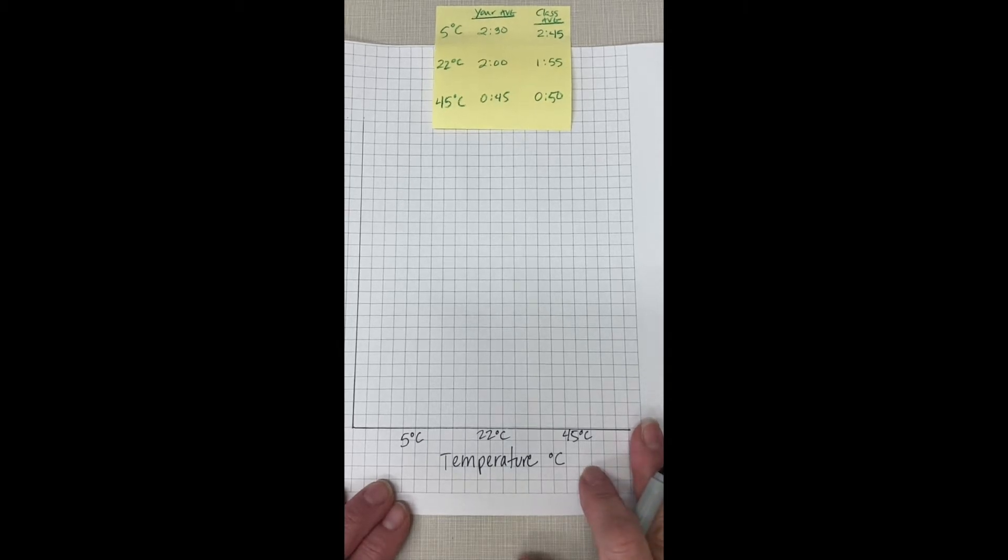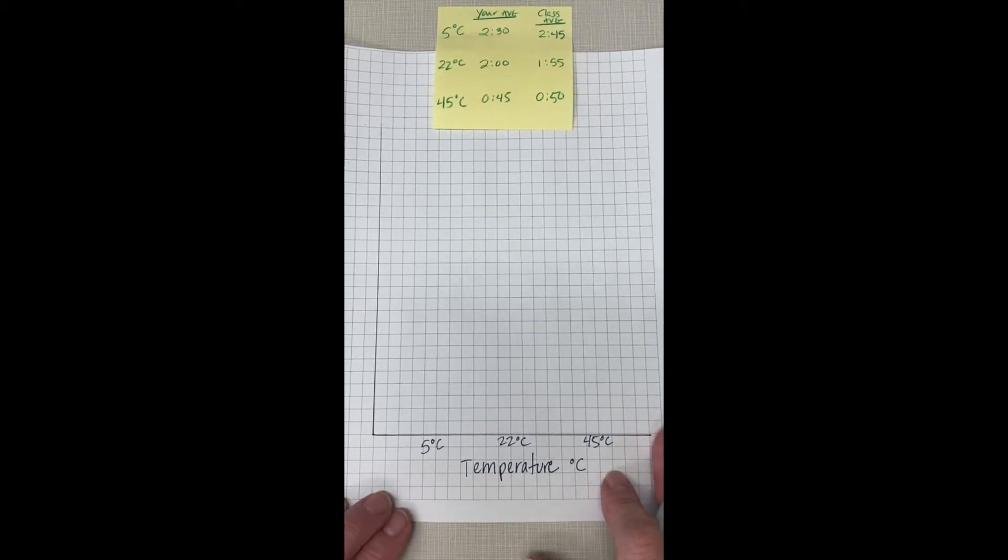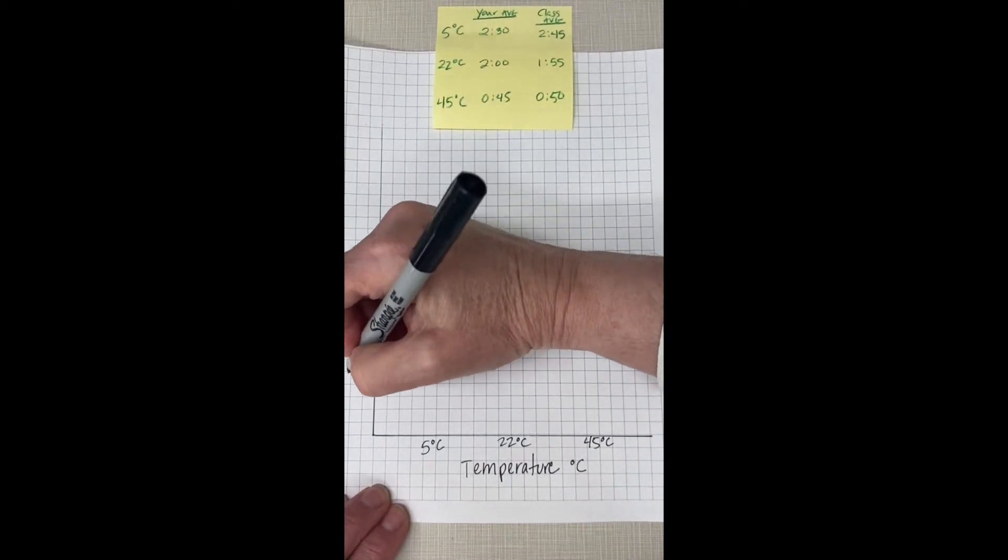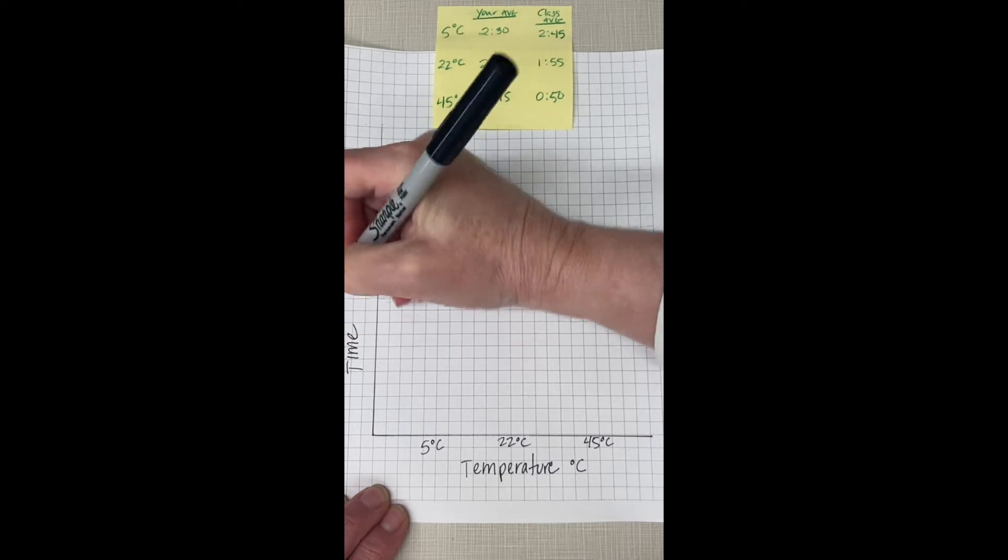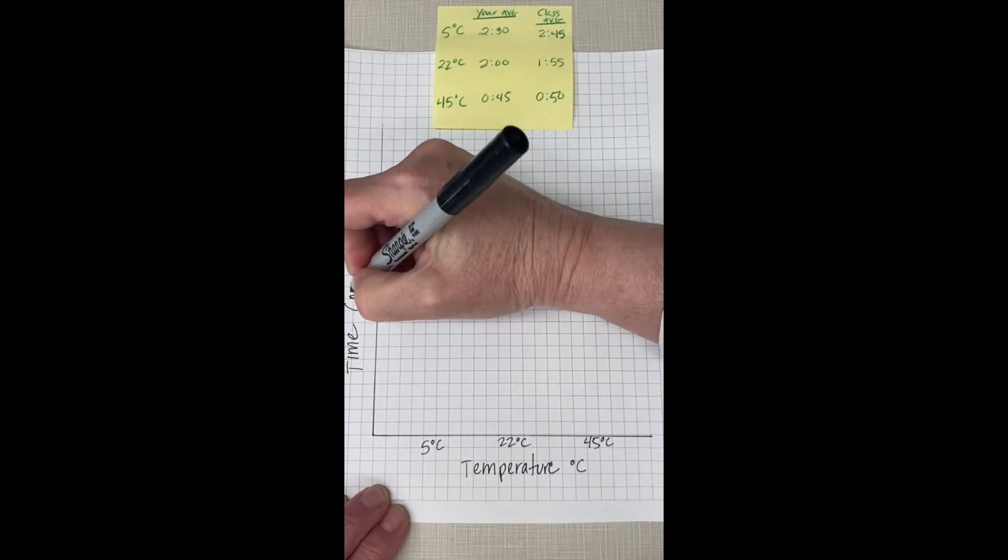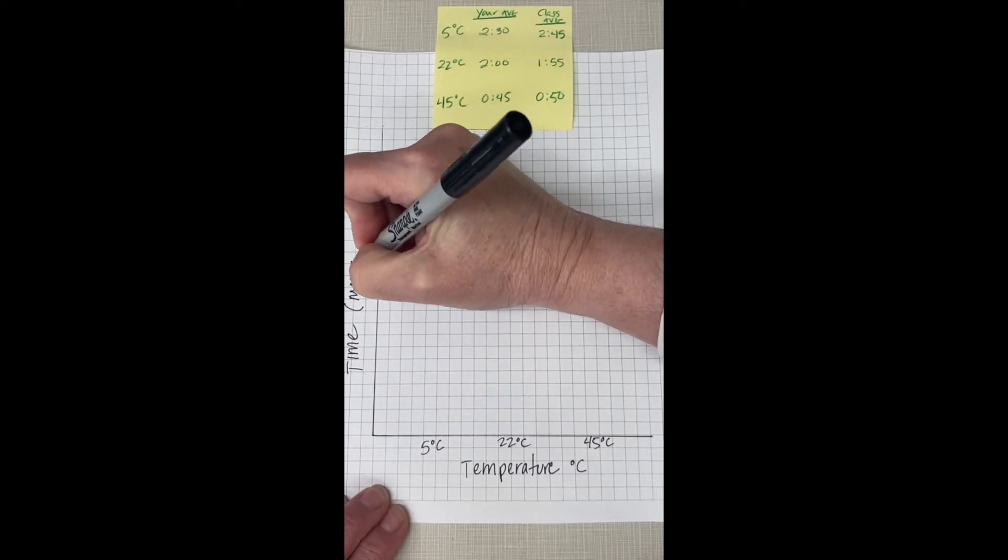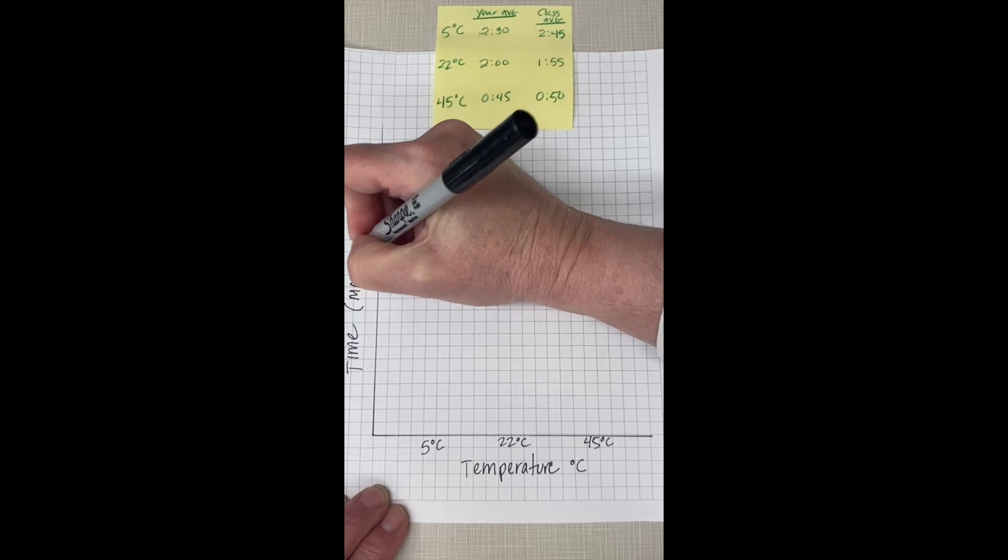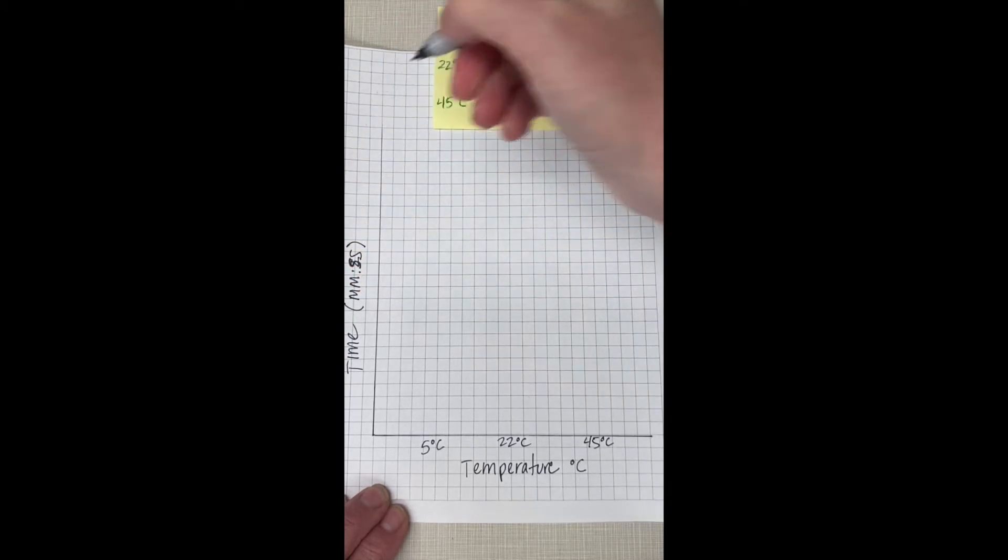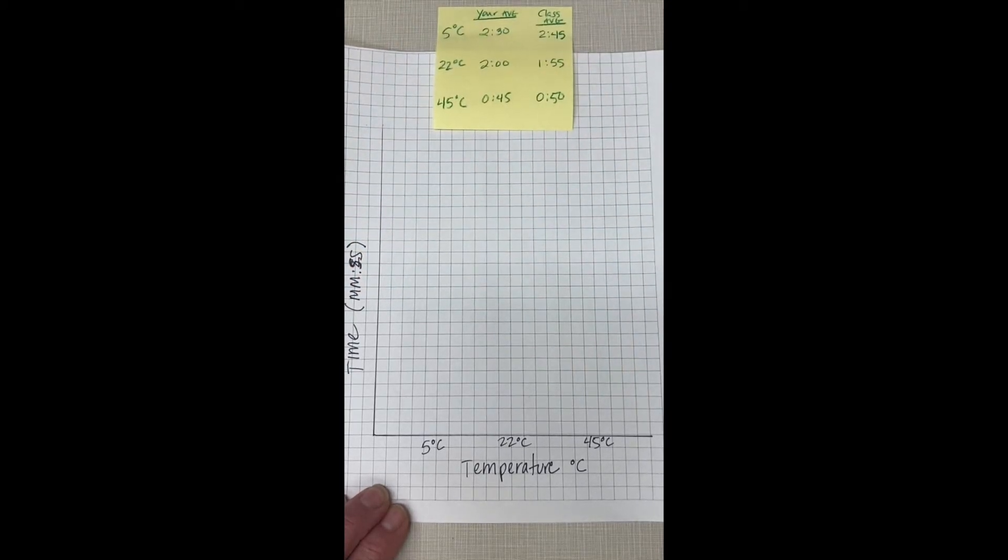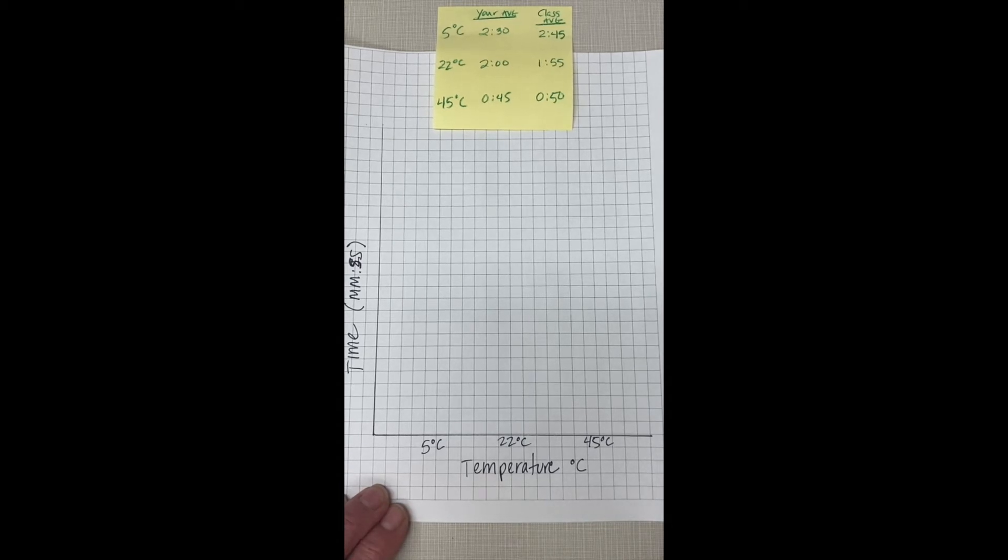So the next thing that we're going to do is set up our y-axis and our y-axis is time. So we're just going to write time like this and then our units are minutes and seconds. Oops, that should be an s. Seconds. Minutes and seconds. So when we write our time on here we'll write it in the form of minutes and seconds.